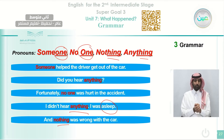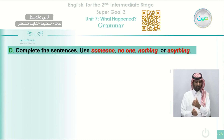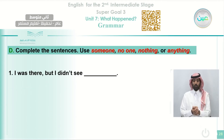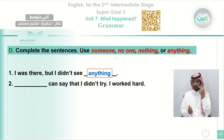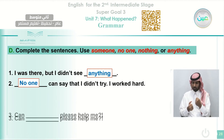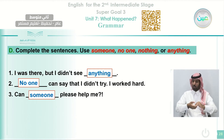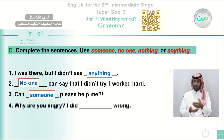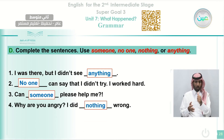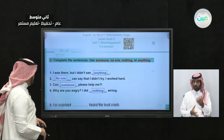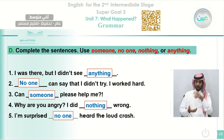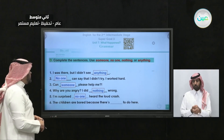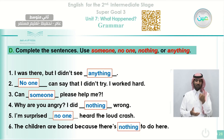We refer to persons with 'someone' and 'no one.' Here is Exercise T — complete the sentences using someone, no one, nothing, and anything. Number one: I was there, but I didn't see anything. Number two: No one can say that I didn't try — I worked hard. Number three: Can someone please help me — you're not asking a specific person. Number four: Why are you angry? I did nothing wrong. Number five: I am surprised no one heard the loud crash — that means nobody heard it. Number six: The children are bored because there is nothing to do here.